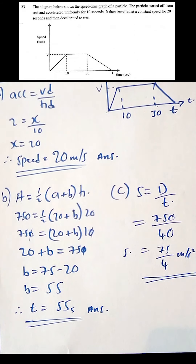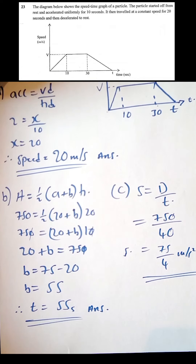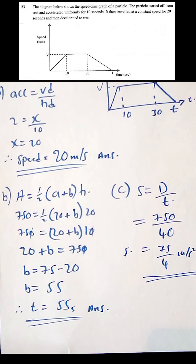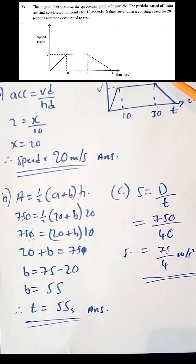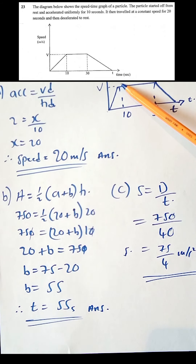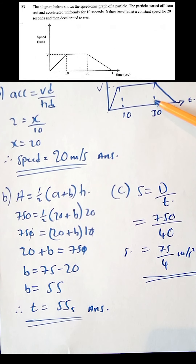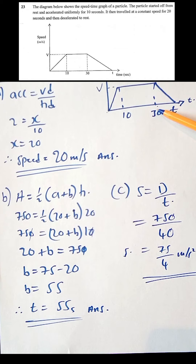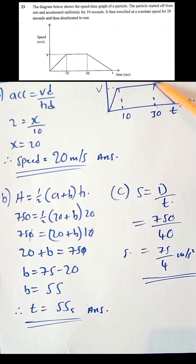Question 23 — the last question — involves a speed-time graph. A particle starts from rest and accelerates uniformly for 10 seconds, then travels at constant speed for 20 seconds, then decelerates to rest.